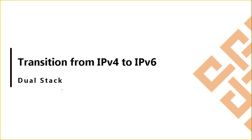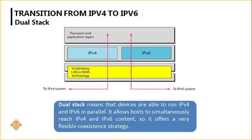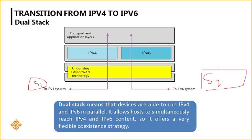The first technique is dual stack. In dual stack, both devices are able to run IPv4 and IPv6 in parallel. Both systems — system 1 and system 2 — are configured with both IPv4 and IPv6 IP addresses. Irrespective of the packet type, you can easily send data from one system to another.